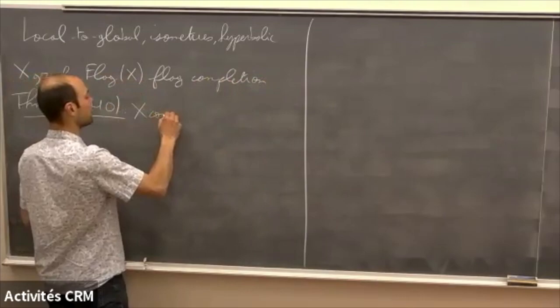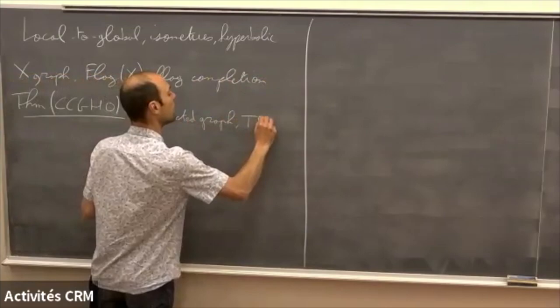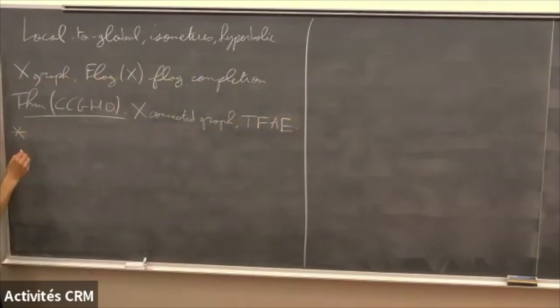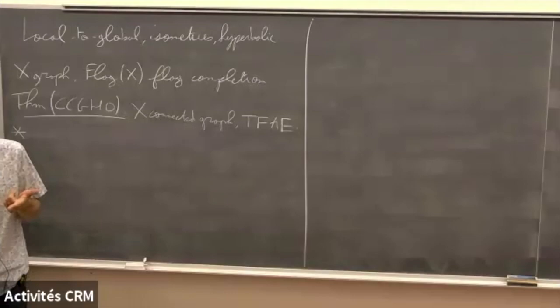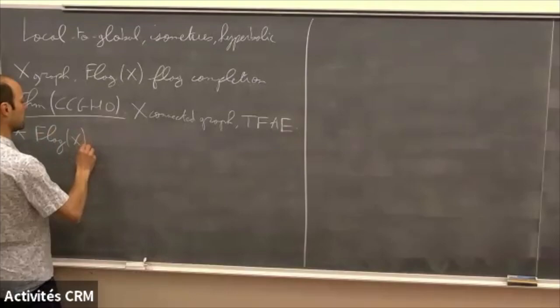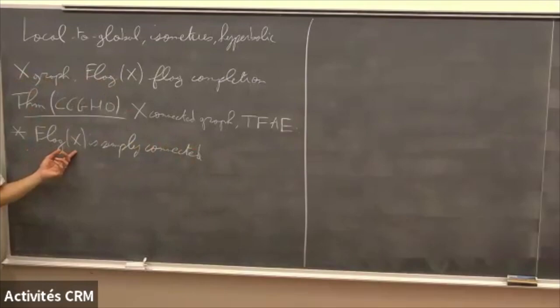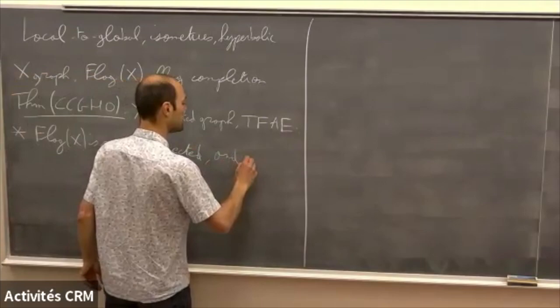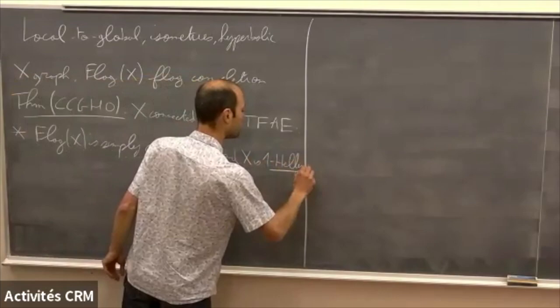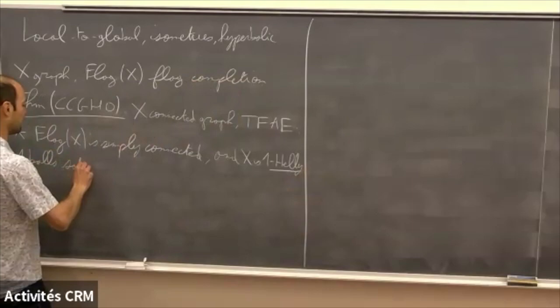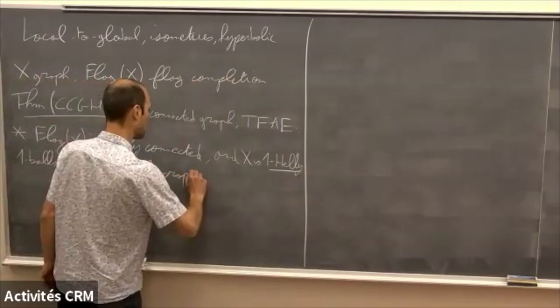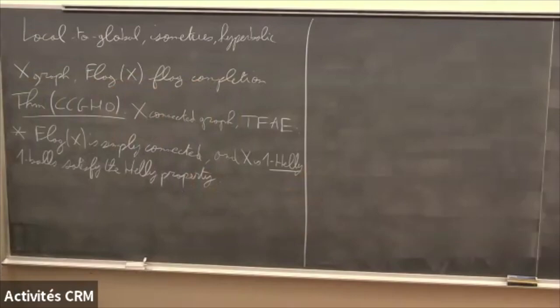If you have a connected graph X, you have the equivalence of the following three properties. We want simple connectedness and local heli-ness. The first one is that the flag completion is simply connected — in fact, since you just need simple connectedness, you just need to look at the triangle complex of X, which is the two-skeleton of this simplicial complex. The second condition is that X is what we could call one-heli: one-balls satisfy the heli property, meaning any family of balls of radius one which pairwise intersect has a global intersection.